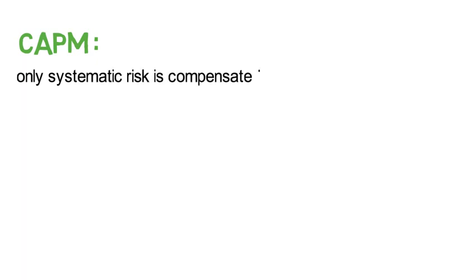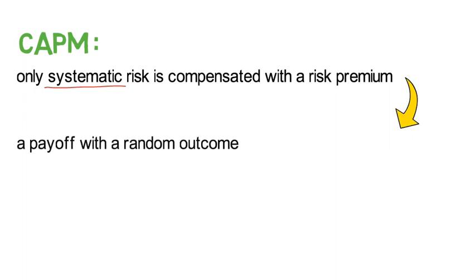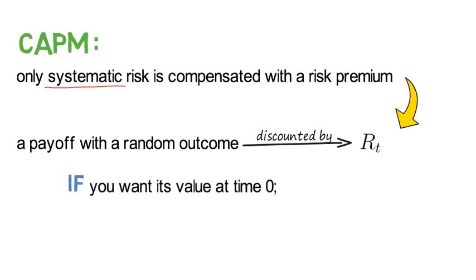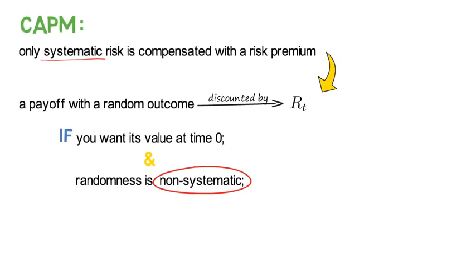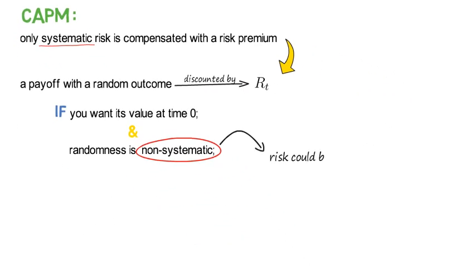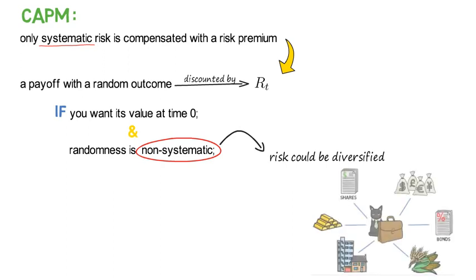From the CAPM you know well that only systematic risk is compensated with a risk premium. Hence a payoff with a random outcome in T would still be discounted by capital R_t if you wanted its value at time zero and if that randomness is considered non-systematic, which means if that risk could be diversified if that asset was part of a large portfolio.